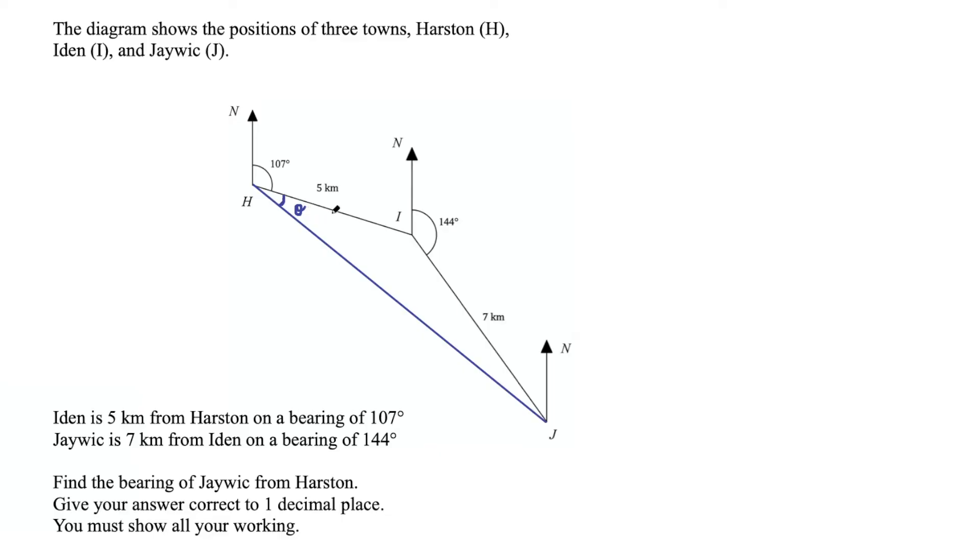There's some gaps here that we can fill just from the information in the question. So the first thing we can find is this angle between these two lines, because the lines pointing north are parallel. They're always parallel. They're pointing in the same direction. And these two angles are co-interior. That means they add up to 180 degrees. That's something you need to know about parallel lines. So this angle is going to be 180 degrees subtract 107 degrees. If you do that calculation, it is 73 degrees. And then we can also find this angle in here.